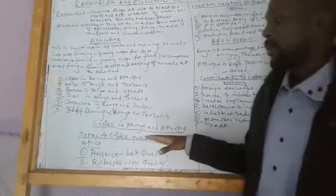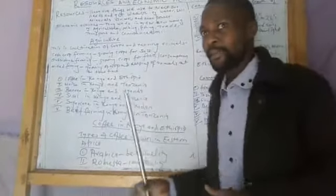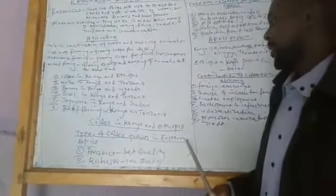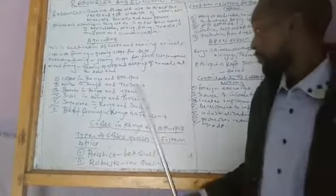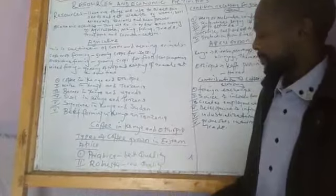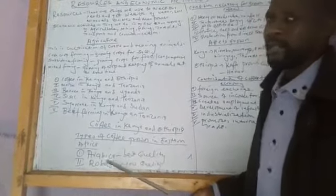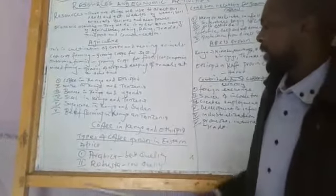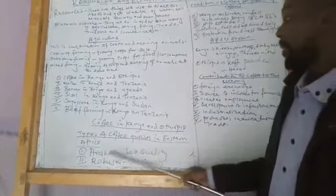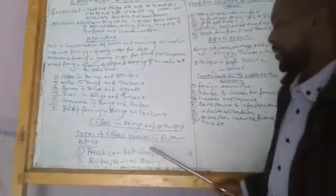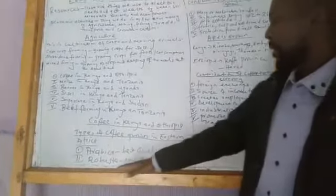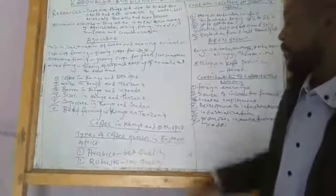We have the types of coffee grown in Eastern Africa, in these two countries Kenya and Ethiopia. One of them is called Arabica and the other one is Robusta. The Arabica coffee is the one that produces the best quality, while Robusta produces the low quality.